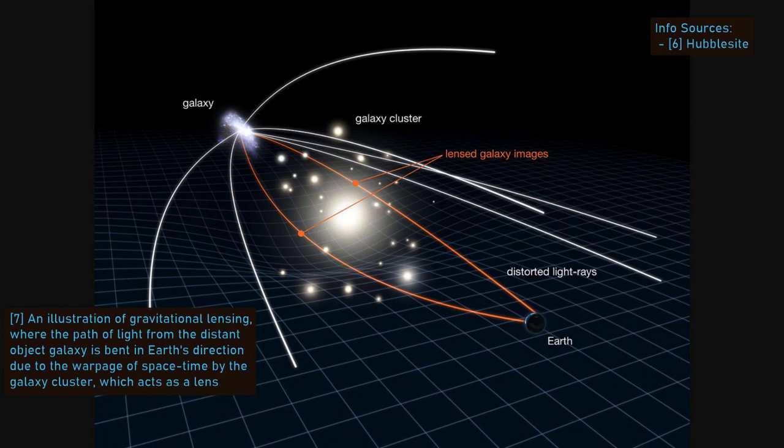While gravitational lensing applies to the use of bodies of mass on the scale of galaxies, or galaxy clusters to act as the lens, the same effect can be achieved with far less massive bodies, such as stars, since they also distort space-time around them.